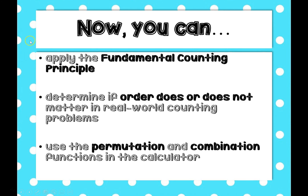In this video we briefly talked about the fundamental counting principle, where we draw the blanks and multiply. We talked about figuring out if order does or doesn't matter for a particular real-world situation, and then based on that, choosing a permutation or a combination. Remember: for permutations, order matters; for combinations, it's just a group and order doesn't matter at all. Go ahead and try the Now You Try problems.